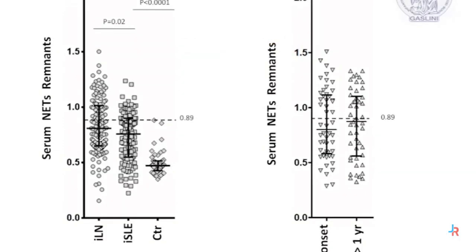Levels of NET remnants were determined in several patients with lupus and lupus nephritis, utilizing an analyzer assay for the myeloperoxidase-DNA complex. The method consists of capturing myeloperoxidase with specific antibodies on solid phase, and determining the free edge of the complex with unconjugated anti-DNA antibodies. Serum NET remnants were significantly higher in patients with lupus nephritis and lupus compared to controls.